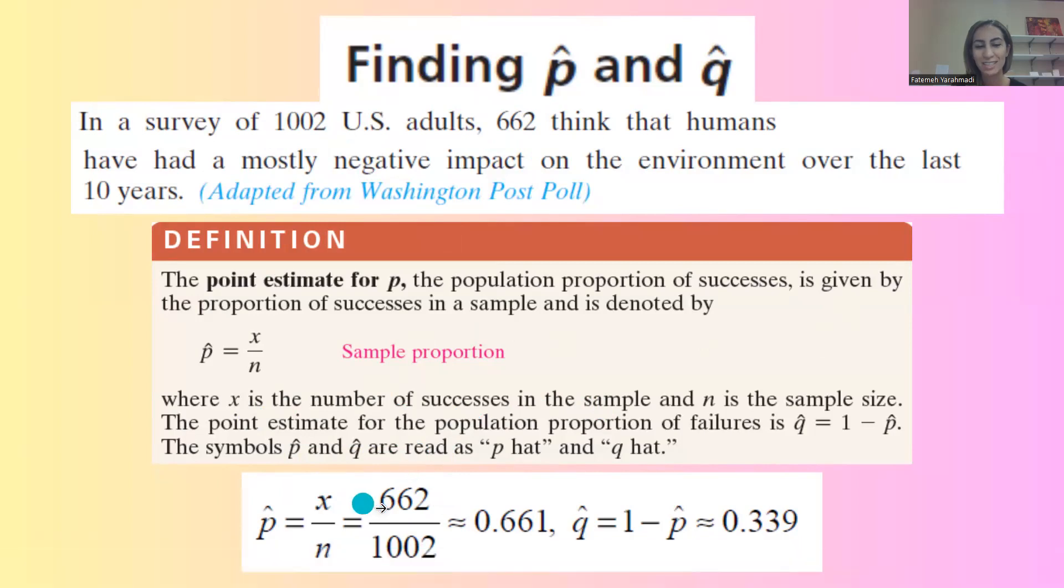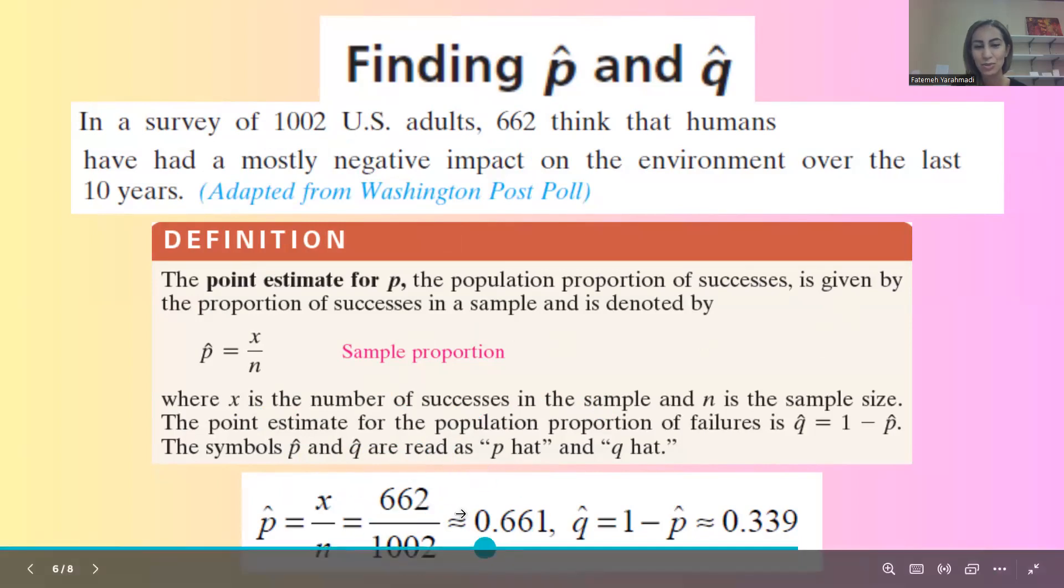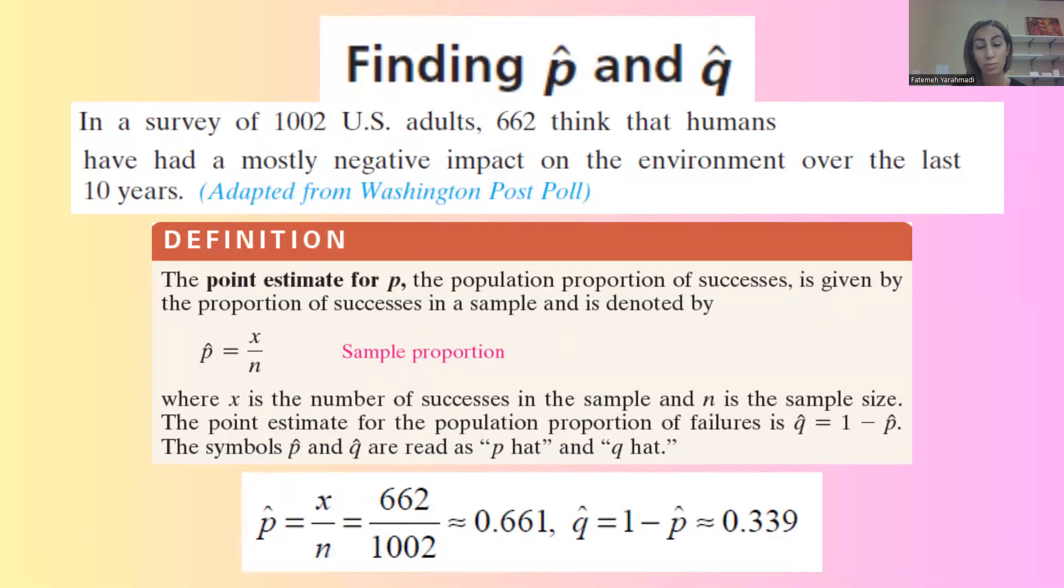Once you divide 662 by 1,002, you get 0.661 or 66.1%.